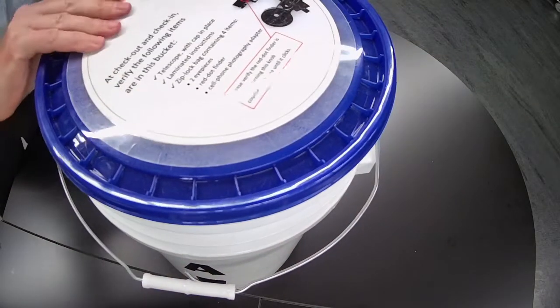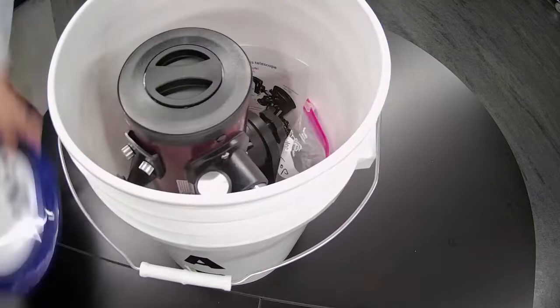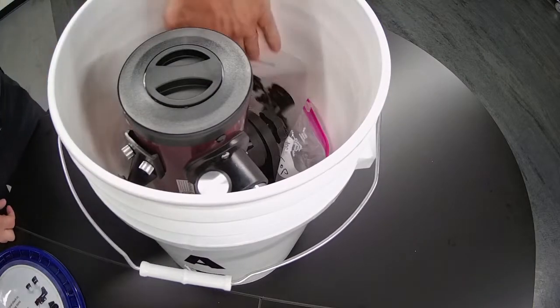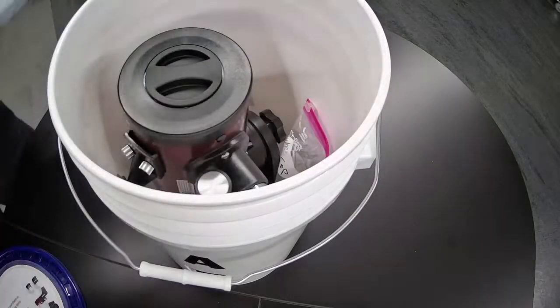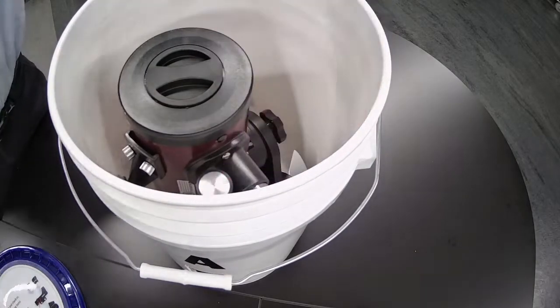Take off the lid, just peel back on the sides until it comes loose. What do we have inside? There is a set of printed instructions. That's a summary of what we're doing right now.